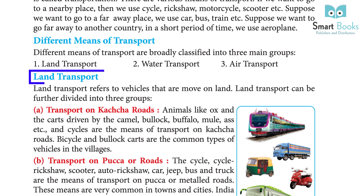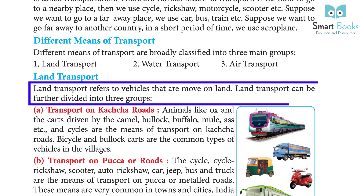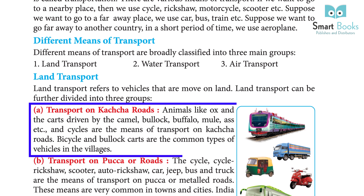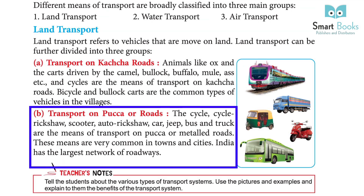Land transport refers to vehicles that move on land. Land transport can be further divided into three groups. Transport on kacha roads: animals like ox, carts driven by camel, bullocks, buffalo, mule, ass, etc., and cycles are the means of transport on kacha roads. Bicycle and bullock carts are the common types of vehicles in the villages.